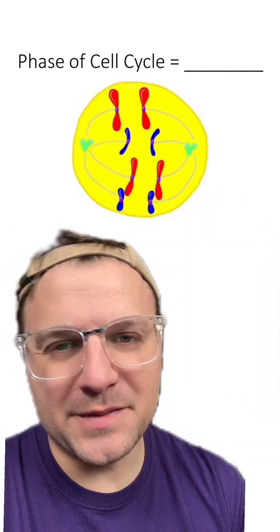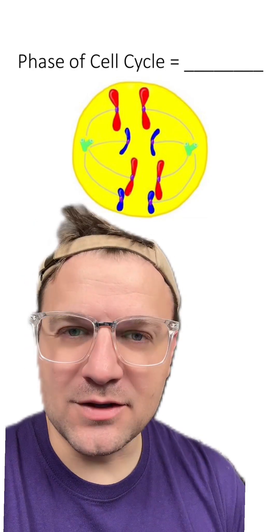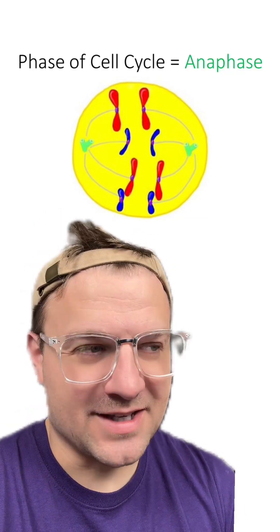Here's the first one. You can see condensed chromosomes being ripped apart. What phase of the cell cycle is this? This cell is in anaphase.